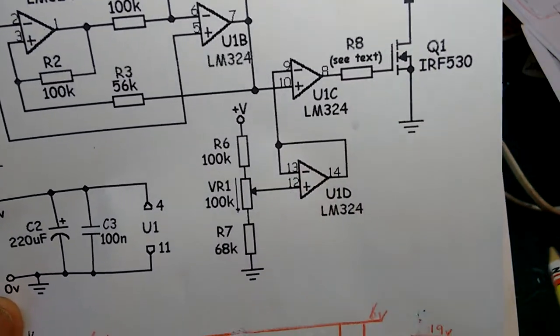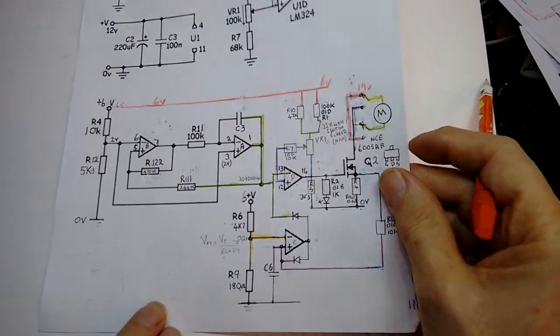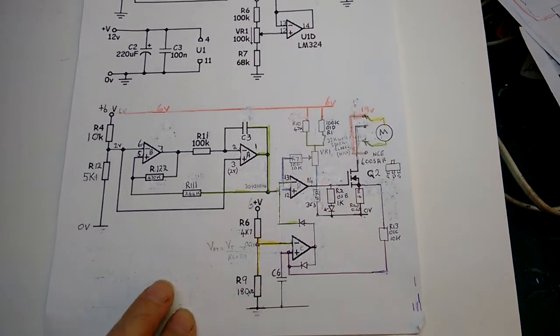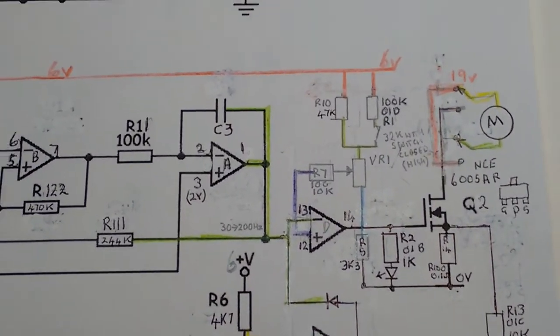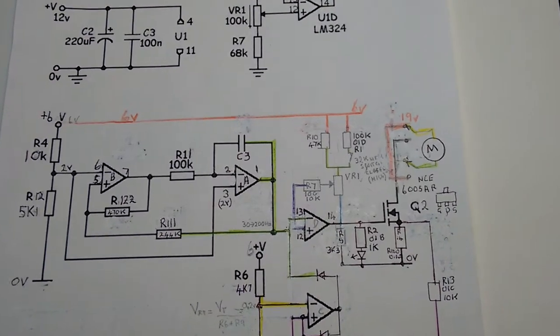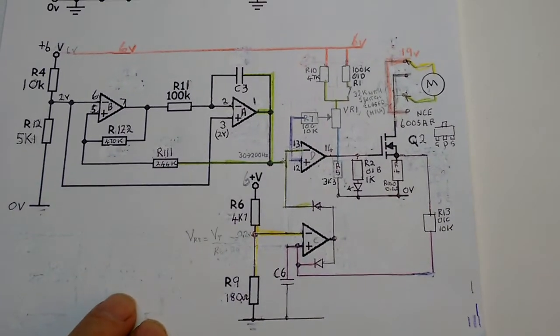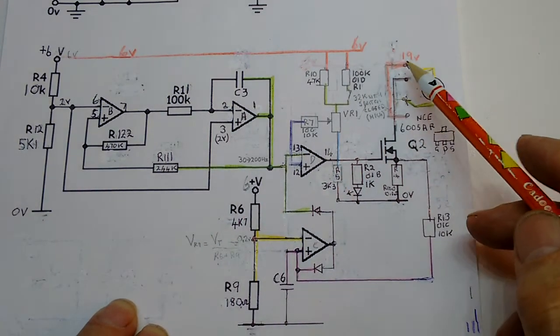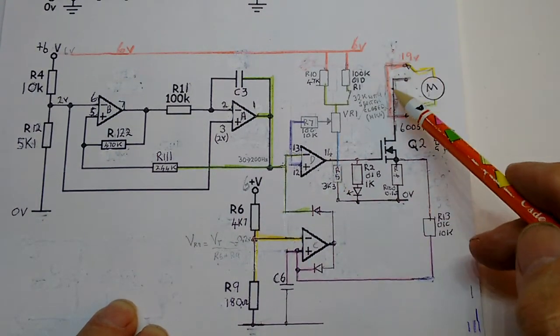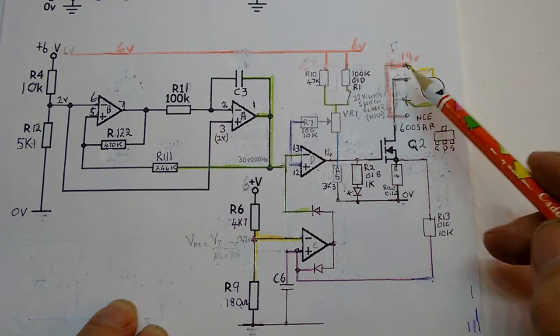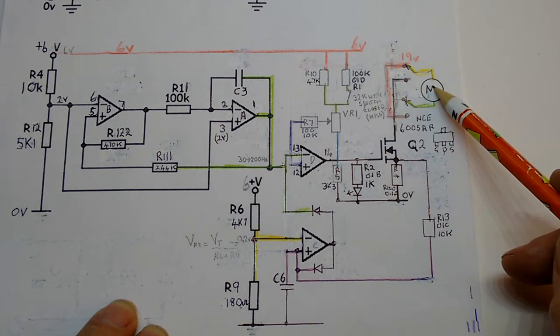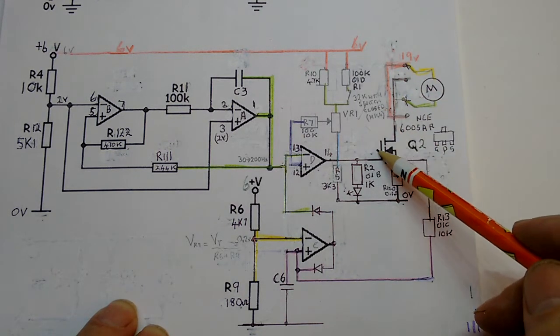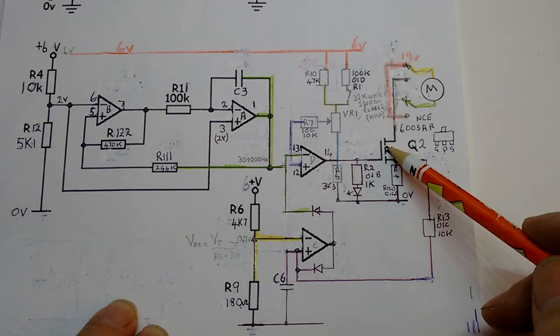So let's look at how I think it actually works. Coming in at this side, we have the 19 volts going into the changeover switch and the motor here. And then down at the bottom here we've got a FET transistor which switches the motor on and off, connected down to ground via this sense resistor.